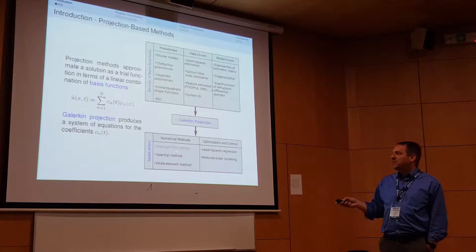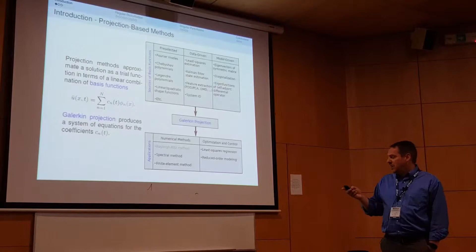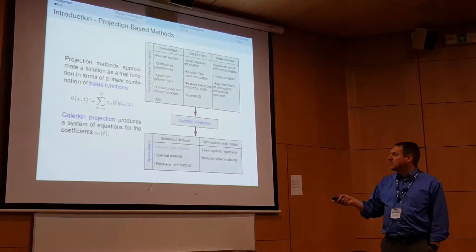For example, in spectral numerical methods, we pre-select our basis functions — Fourier modes, Chebyshev polynomials — based on their orthogonality and ease of integration. Through Galerkin projection, we end up with a system of equations to solve for the coefficients.